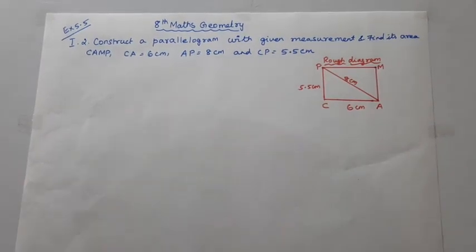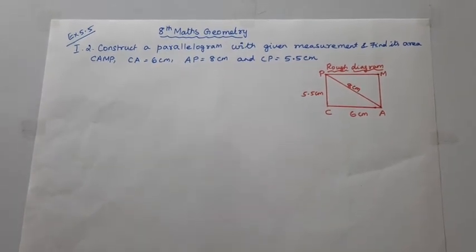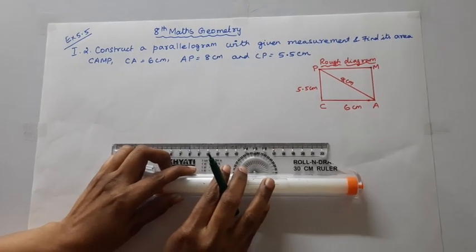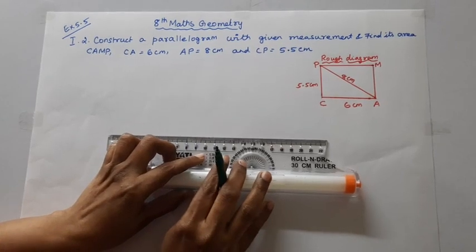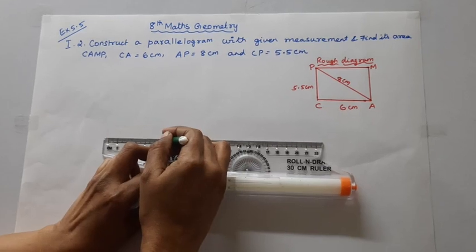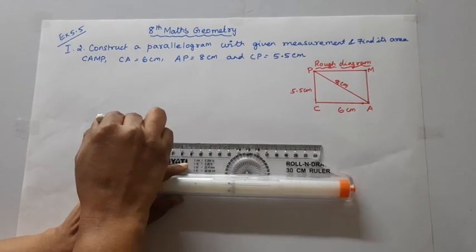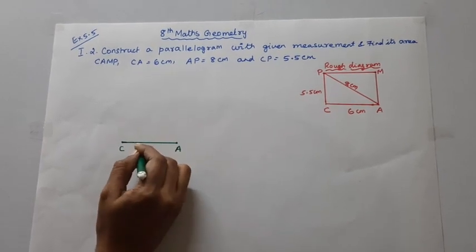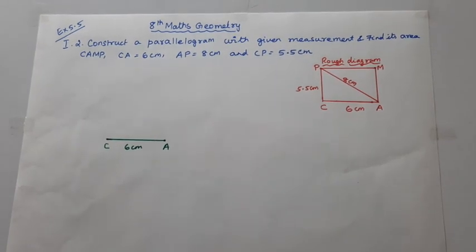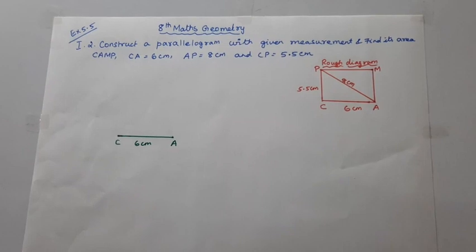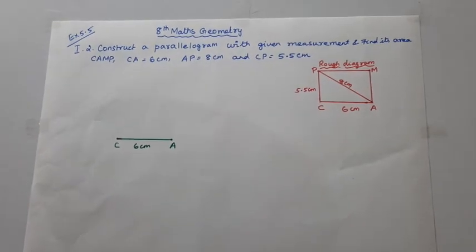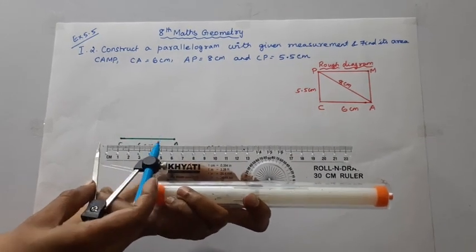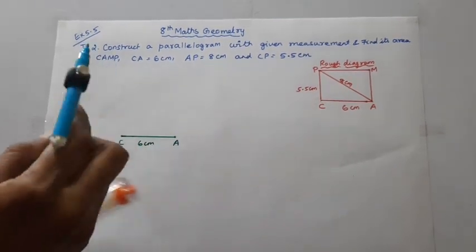Now we will draw the rough diagram first, then the actual diagram. CA = 6 cm. Draw CA 6 cm. Then draw CP: CP = 5.5 cm. Measure carefully with the scale and mark it correctly. CP = 5.5 cm.